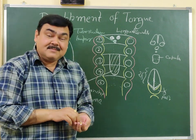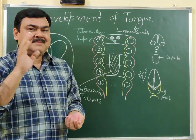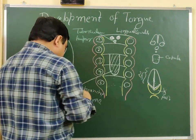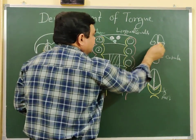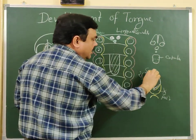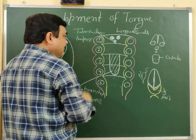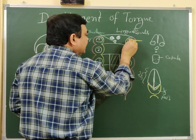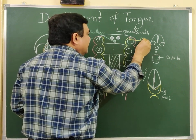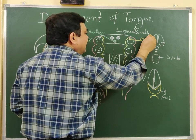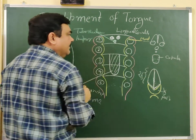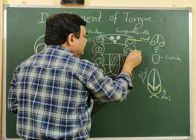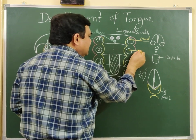If you see the nerves of the tongue on the basis of development: the first arch gives rise to the anterior two-thirds of the tongue. The post-trematic nerve of the first arch is the mandibular nerve, so it is supplied by the mandibular nerve. The nerve of the second arch is the facial nerve.